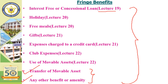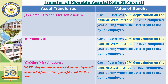We have already covered interest-free or concessional loans, free meals, gifts, credit card and club-related expenses, and use of movable assets. In this video we will cover transfer of movable assets and how to value any other benefit that an employer provides.